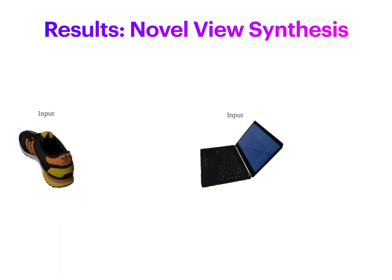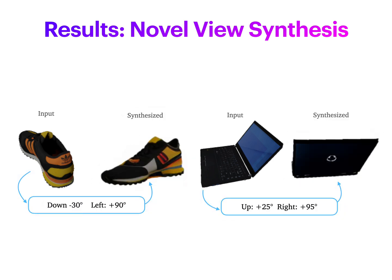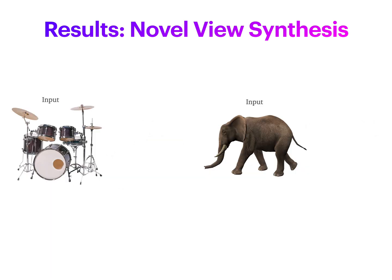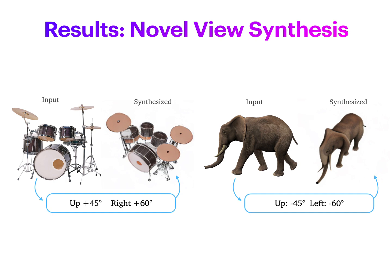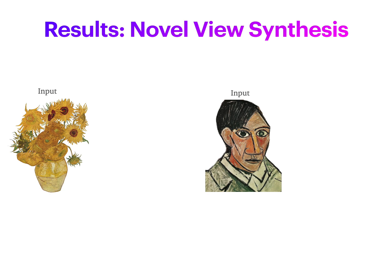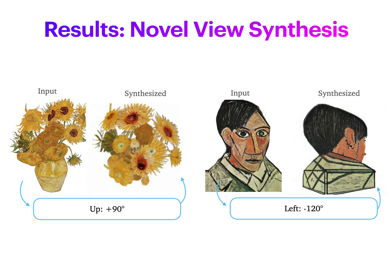After fine-tuning, we discovered that our model exhibits unprecedented zero-shot generalization performance. For an input image, we can specify a camera transform and 0123 can synthesize the specified novel view. It also works on objects with complex geometry that are traditionally hard for prior methods, as well as deformable objects, and even imaginary objects like the sunflower in Van Gogh's painting or Picasso's self-portrait. These results showcase 0123's impressive zero-shot generalization ability, which differentiates it from all prior works.